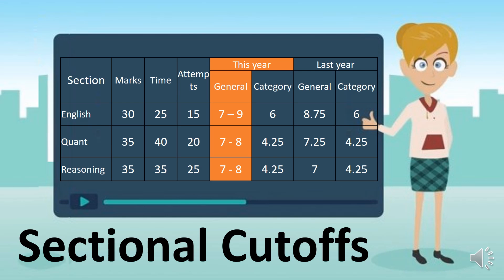Let's talk about the sectional cutoff. Section by section, this is an ideal attempt. In the English section, you have to do 15 questions; Quant, 20 questions; and Logic, 25 questions. This is an ideal attempt — the minimum attempt you have to do to clear the cutoff. There is no hard and fast rule, but this is the expected cutoff depending on the level of difficulty of the paper.